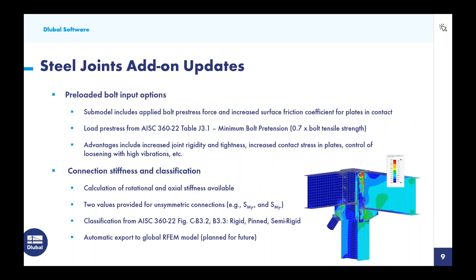Moving on to a few updates implemented in the Steel Joints add-on over the last year. First is the preloaded bolt input option — we can now consider preloaded bolts where the submodel automatically includes the applied bolt pre-stress force, along with an increased surface friction coefficient for plates in contact. The load pre-stress comes from AISC Table J3.1, referencing the 0.7 factor times the bolt tensile strength. Advantages of a preloaded or slip-critical connection include increased joint rigidity and tightness, increased contact stress in plates before additional loads are applied, and better control of loosening in high-vibration environments.